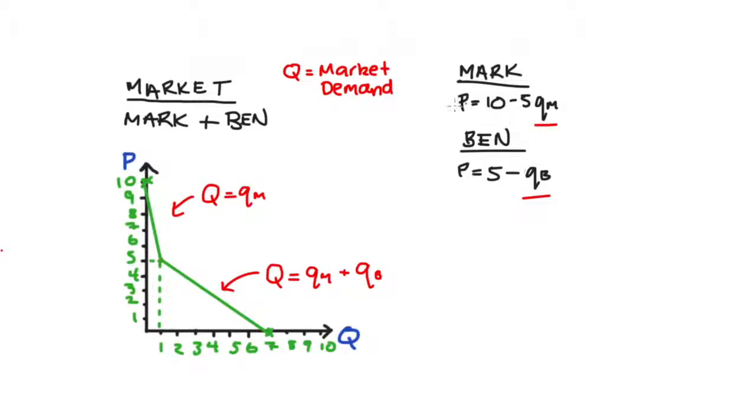And so actually, all we need to do in order to fill out our market demand equations we have here is to manipulate the expression of our individual demand curves for Mark and Ben to be in terms of these quantity variables. And then we're just going to substitute them into our market demand equations that we have here. So Mark's demand is currently described as P equals 10 minus 5Q. I want this in terms of Q subscript M. So first I take away 10 from both sides, I then divide both sides by negative 5, and I get Q subscript M equals 2 minus P over 5.